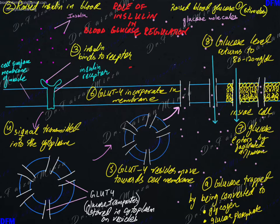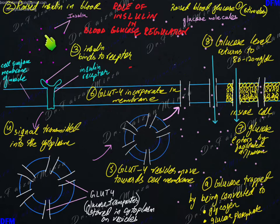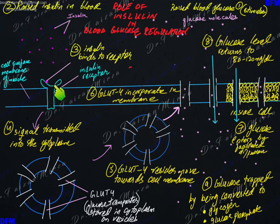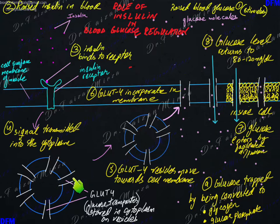In one type of diabetes mellitus, this hormone is simply absent. If the hormone is not there, no matter how many receptor molecules you may have for insulin, the body is not going to respond. These channels will stay in the cytoplasm because the insulin molecule is not there.